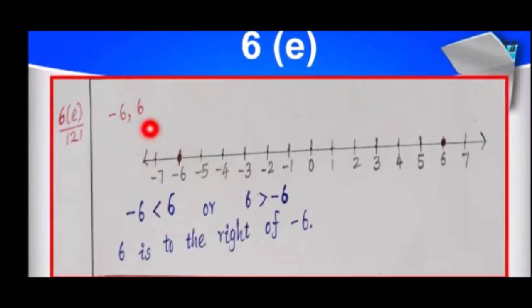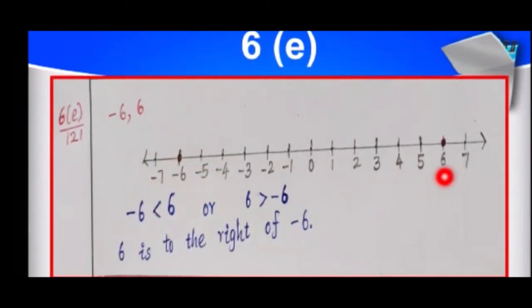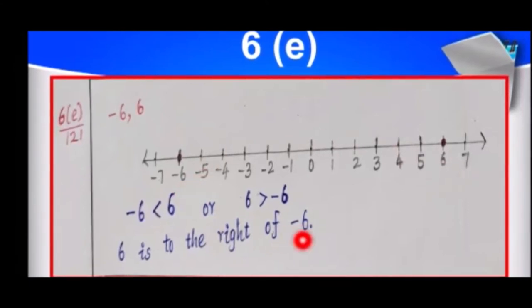Next, minus 6 and 6. Draw the number line and mark the numbers. Minus 6 is here, and 6 is to the right side of 0. So, 6 is to the right of minus 6. This is the answer.